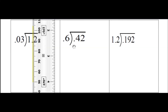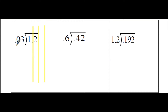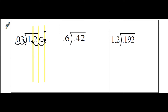Before we do anything else, we want to make sure that we make our columns. I'm going to move the decimal over 2 places to get 3, and move the decimal on the inside 2 decimal places as well. That empty space is going to have a 0. If you are not very good with your multiplication facts, I'm going to show you how to make a list.